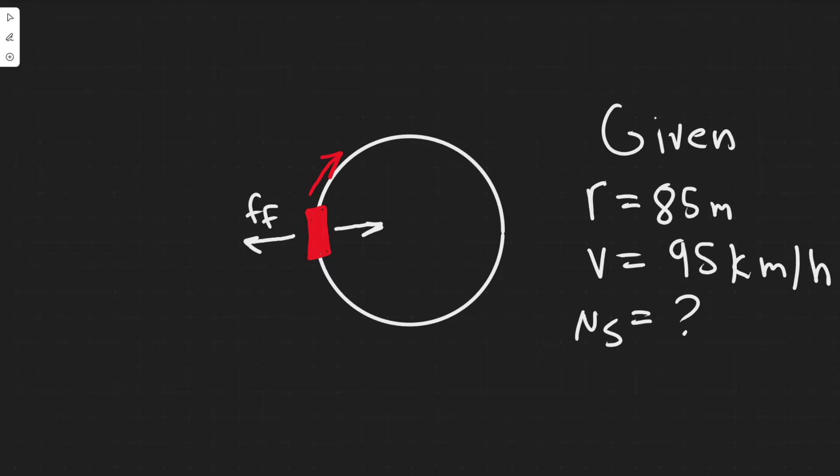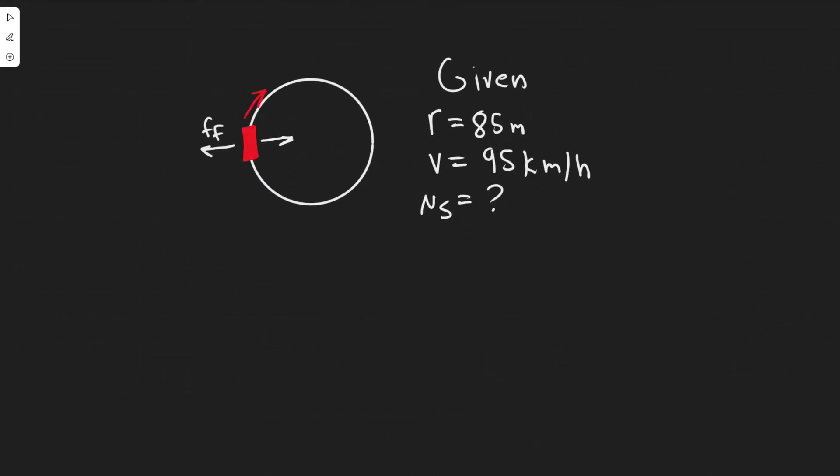The thing you need to understand here is that the centripetal force, which is defined by mass times the centripetal acceleration, has to be equal to the force of friction. So m·aᴄ has to be equal to the force of friction, which is μₛ times Fₙ.